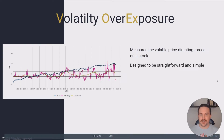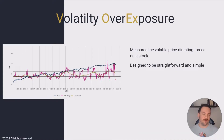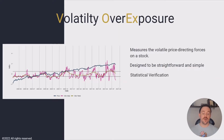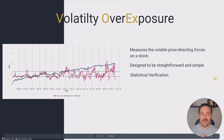So they measure the price-directing forces on a stock, and Vorex was designed to be pretty straightforward — I didn't want it to be complicated. There are two lines: the Vorex daily, which is magenta, and then there's the Vorex trend, which is golden. And that's it. But I also wanted it to be statistically verified, and thankfully Vorex ended up being very statistically relevant, which we're going to take a look at as well.